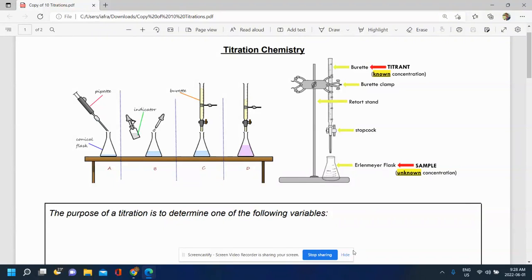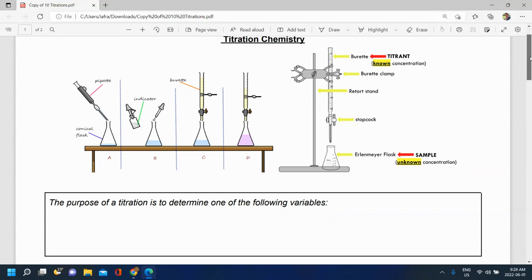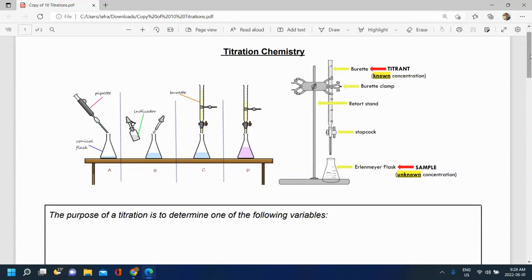In this video we're going to have a brief review of titration. Titration was a concept that you saw in grade 11 for the most part and it's a technique that's often used in chemistry to figure out concentrations of something that we may not know the concentration of.